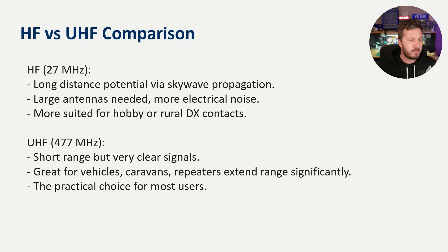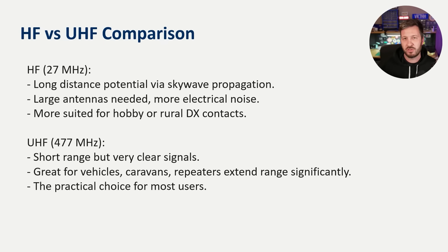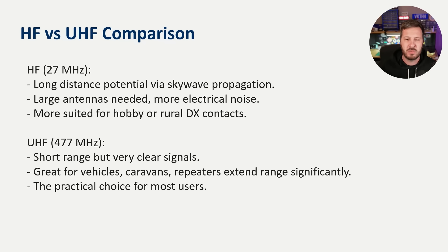A quick comparison: 27 megahertz is great for long-distance communication but requires large antennas and has background noise problems — more suited for rural use or hobbyists. UHF gives short, very clear signals, great for vehicles and caravans, and repeaters can extend that coverage quite a long way. This is what most people use.